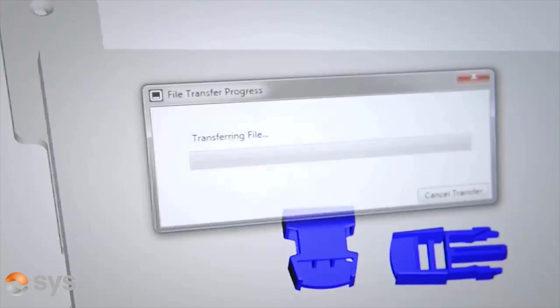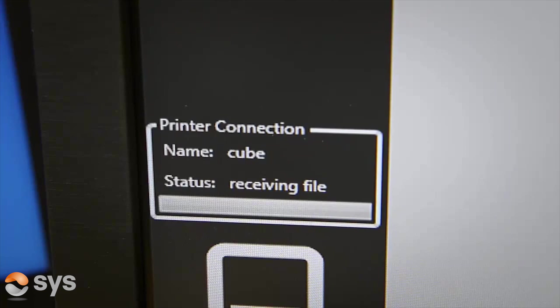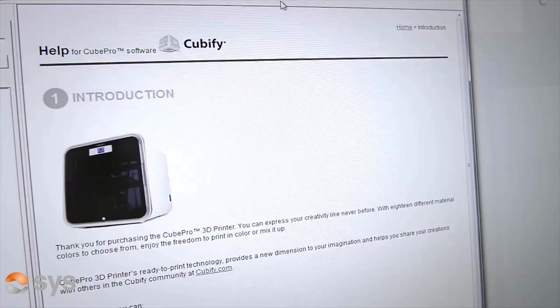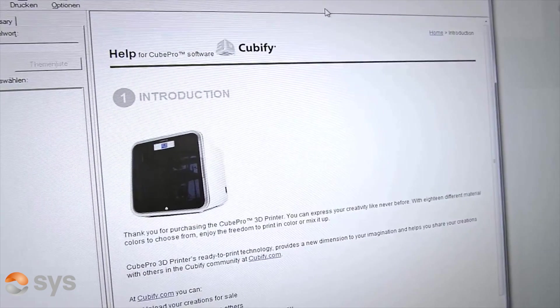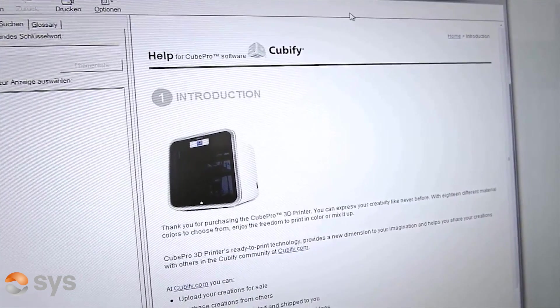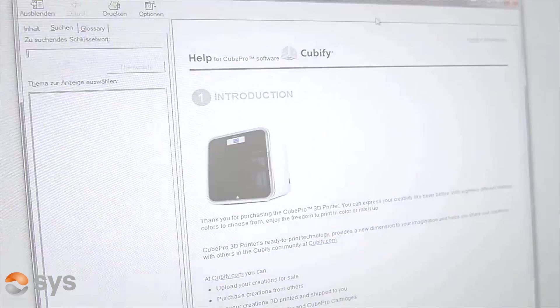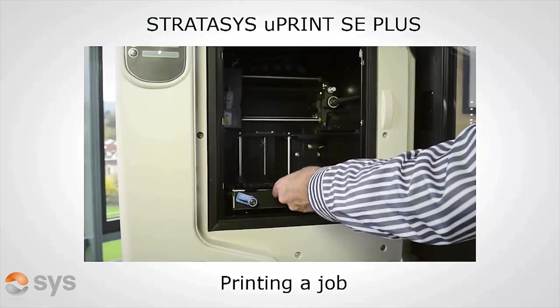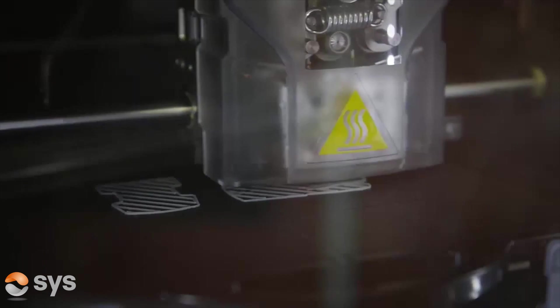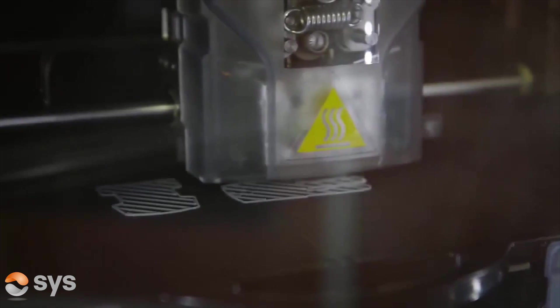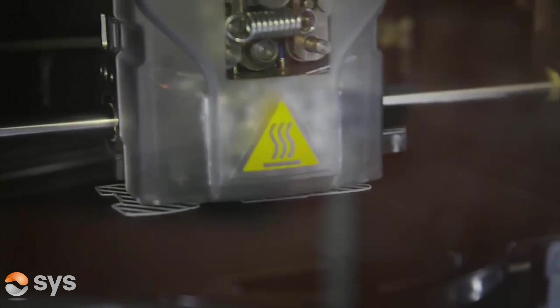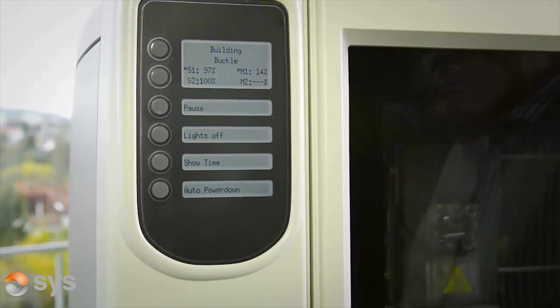Looking at the help functionality, it's HTML based with the normal quick search based features you would expect to see. The print job starts by laying down a few layers of soluble support material as base fixed to the tray and then applies model material and soluble material as defined in the print job.